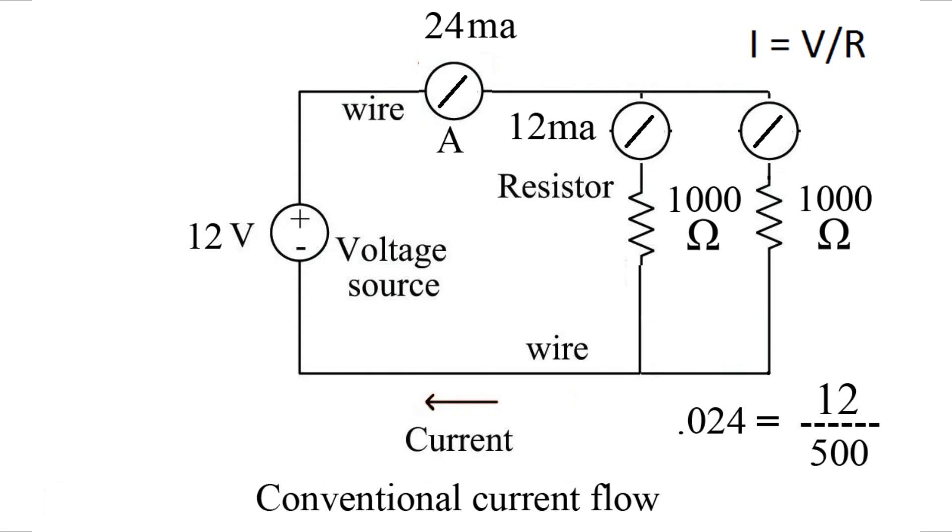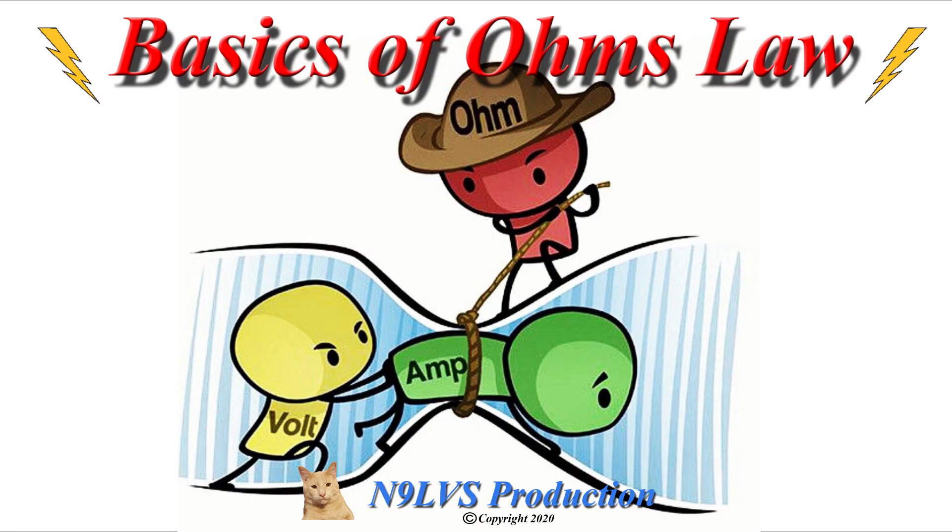12 milliamps going to one resistor, and 12 milliamps going to the other resistor. And that's basic Ohm's law. I hope this video has been helpful.